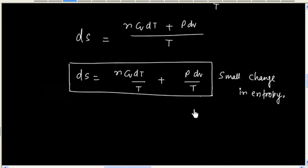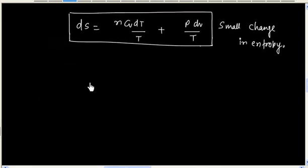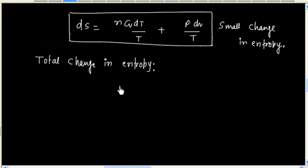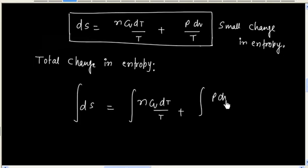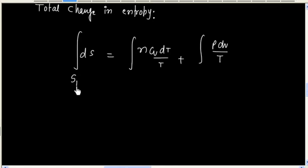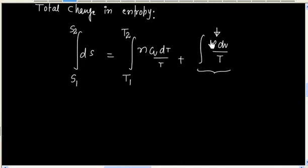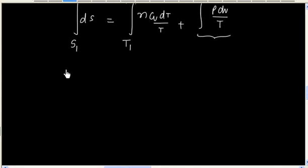This is a general expression, and we can integrate it to calculate the total change in entropy. We can integrate both sides. Let the initial entropy be S1, the final entropy be S2, the initial temperature be T1, the final temperature be T2. In this expression we need to remove pressure — that is, we want to express pressure in terms of volume and temperature.